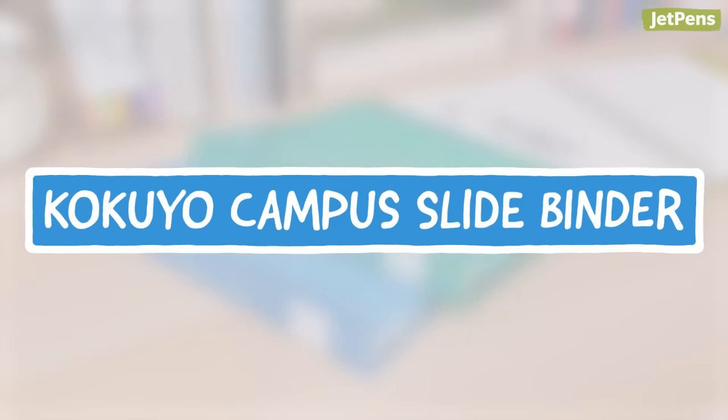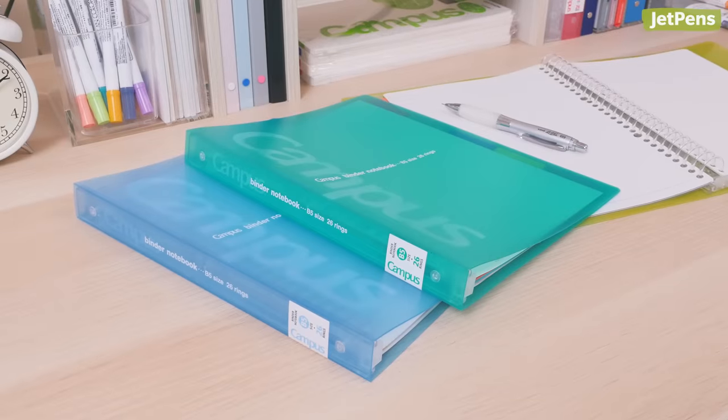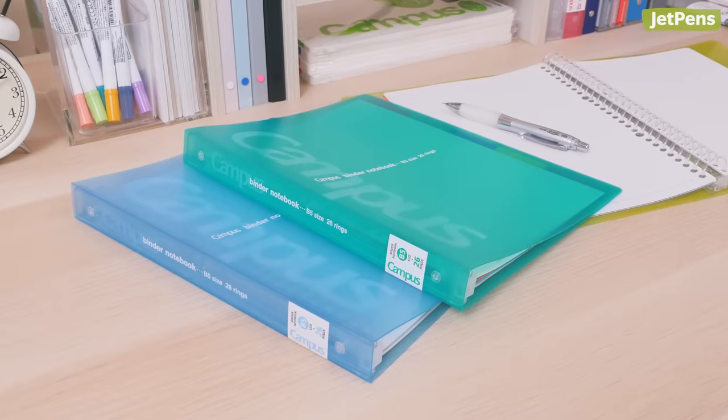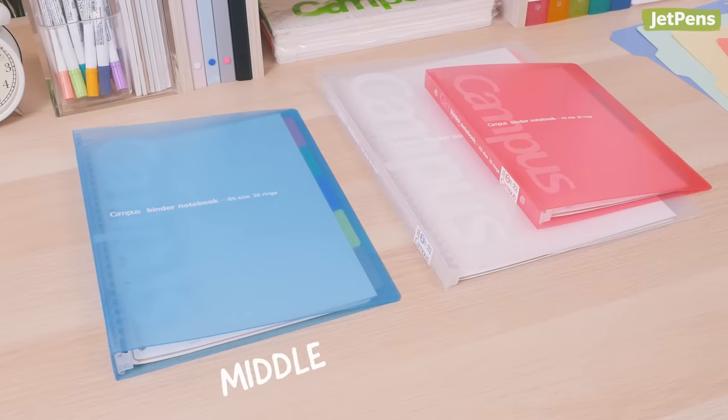We've mentioned the Kokuyo Campus Slide Binder in our previous Japanese binders video, but with new colors and extra accessories, we thought it was time to bring it back! The Campus Slide Binder is now available in two styles, middle and slim.